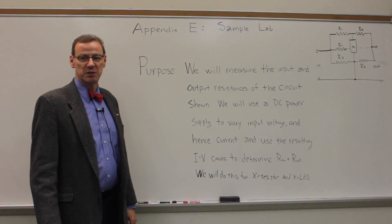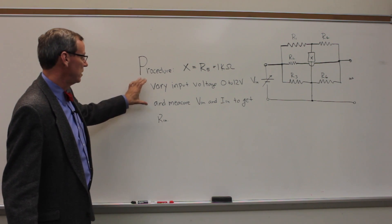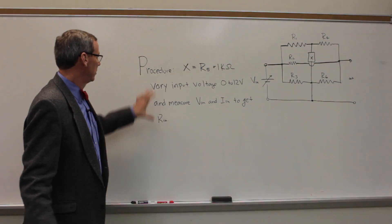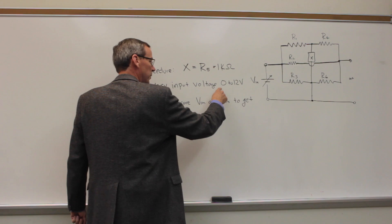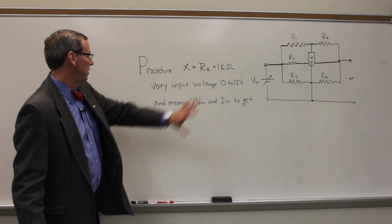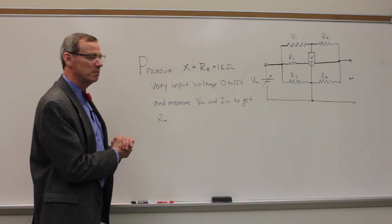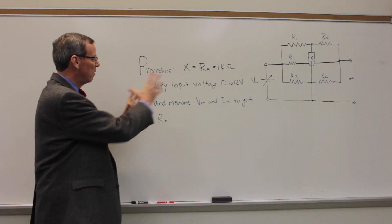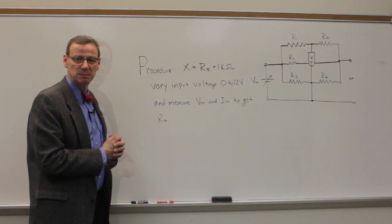So let's move on to the procedure section of the lab. So in this part we're measuring the input resistance for the circuit. If we replace this component X with a 1 kiloohm resistor. So we wrote a procedure X equals R5 is 1 kiloohm. Vary the input voltage of a variable DC voltage from 0 to 12 volts and measure V_in and I_in to get R_in. So that's a plausible procedure that you might have written down in your lab book. But there's a lot of things that just are incomplete in this. So why don't you pause the video for a second and think about what might be incomplete in this. And then we'll come back in a second and talk about what those things are.